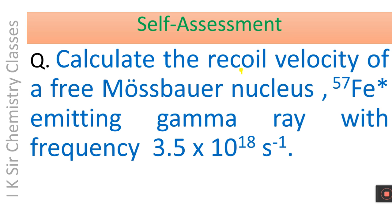Self-assessment: Calculate the recoil velocity of a free Mössbauer nucleus Fe-57 emitting a gamma ray with frequency 3.5×10¹⁸ per second. Please pause the video and try to solve the problem within five minutes.